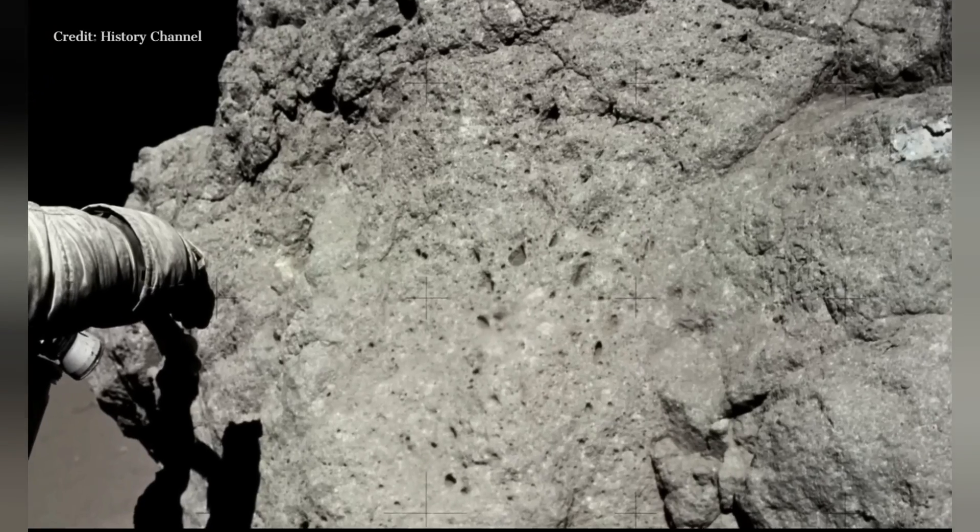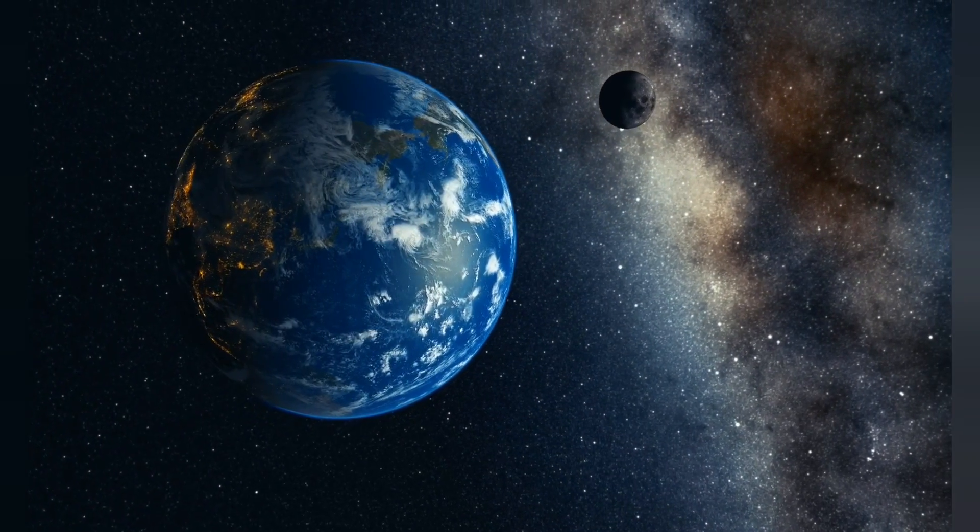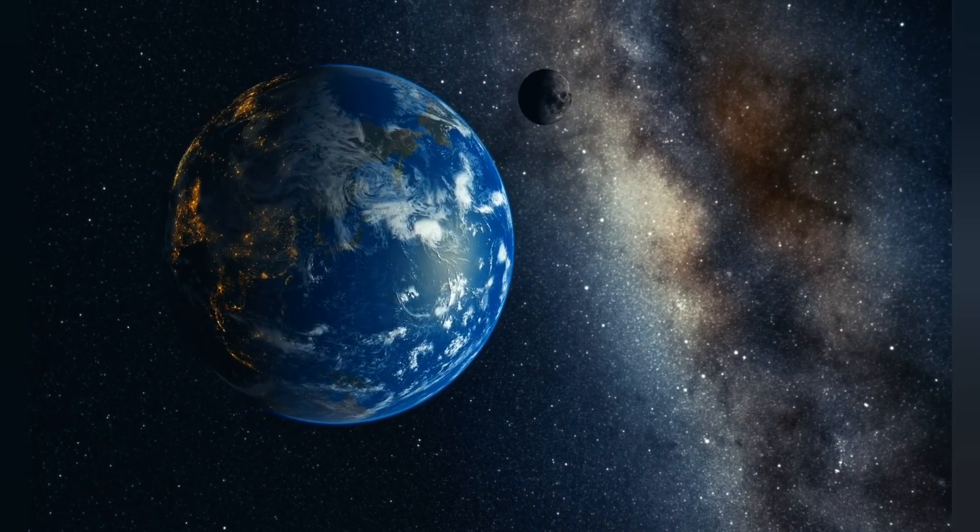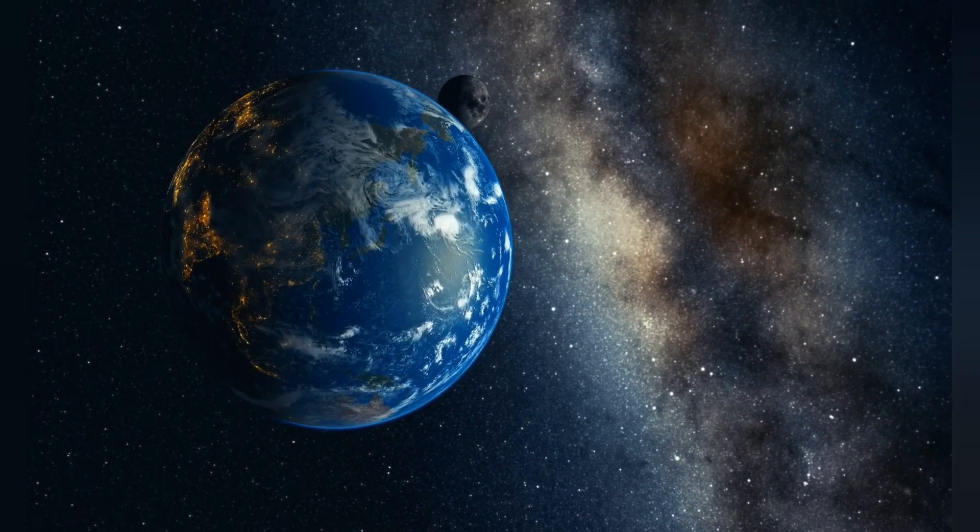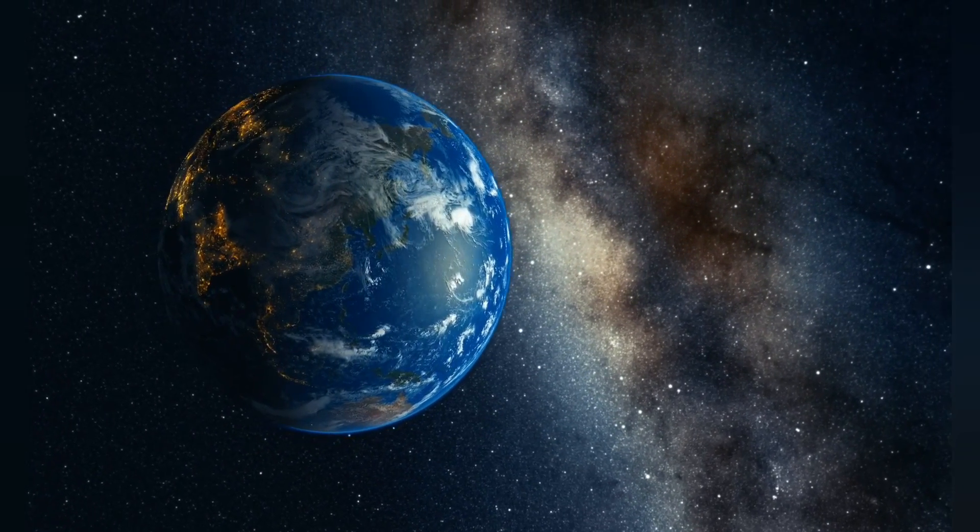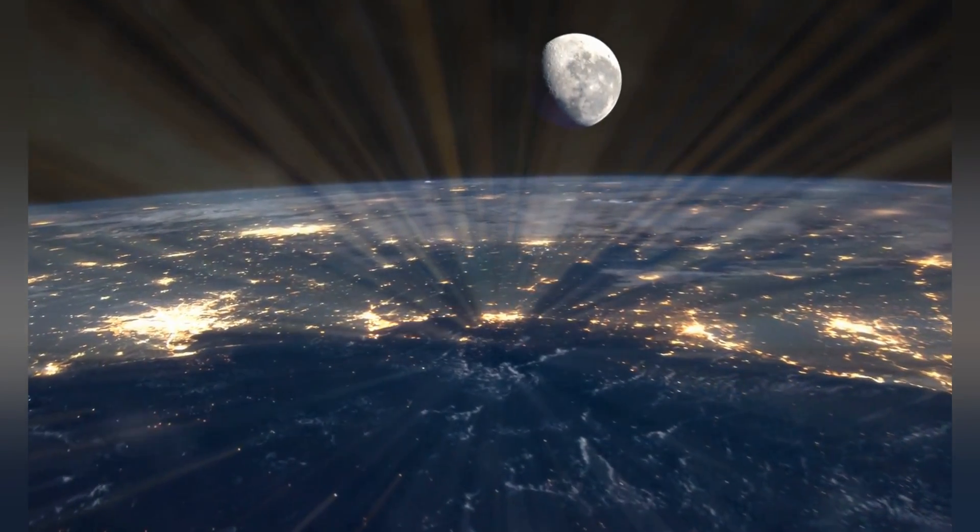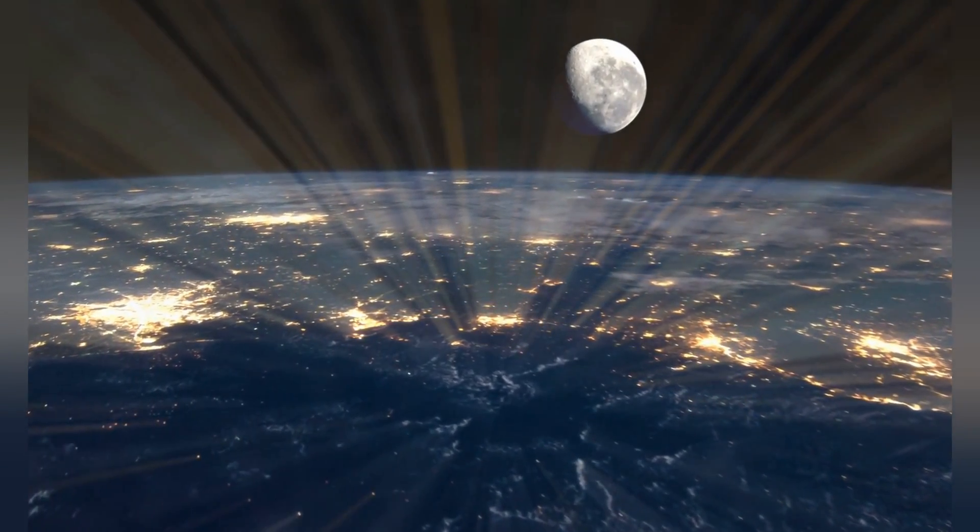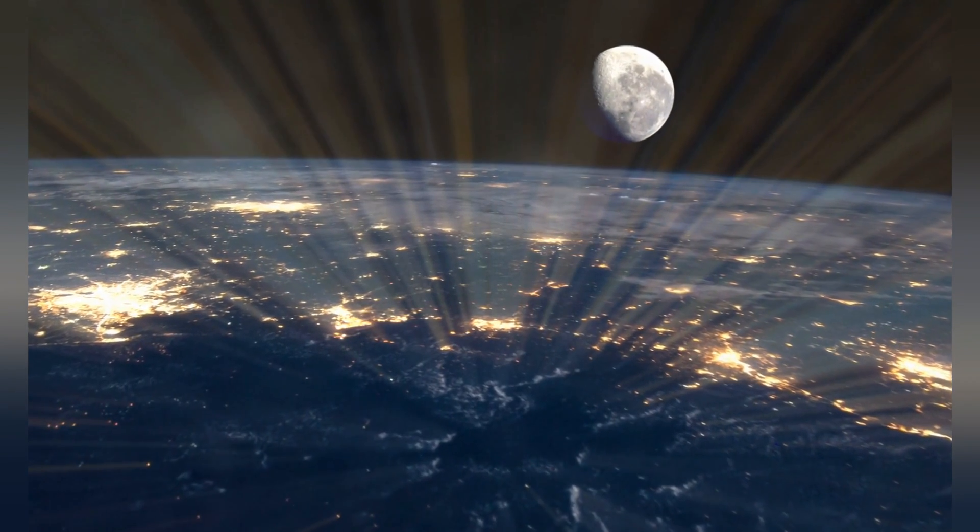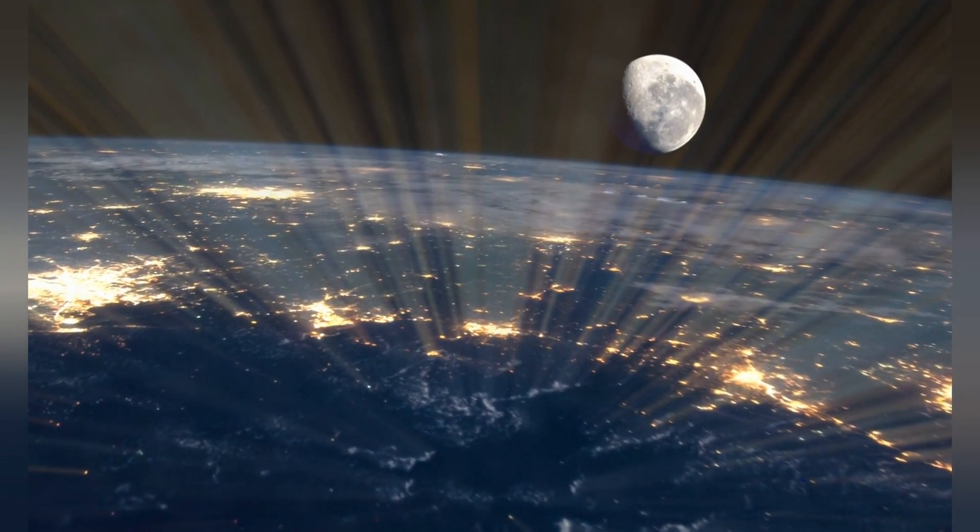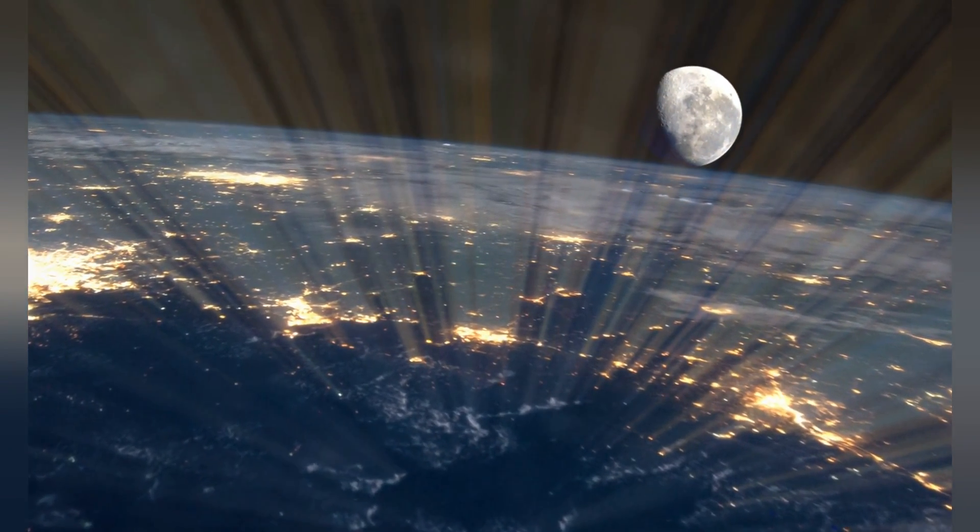The fourth unique property is its orbit. It is much closer to Earth than any other moon in the solar system, and its close proximity has led to significant gravitational interactions with our planet. This interaction has caused the moon to gradually move away from Earth over time and has played a role in the Earth's tides and stabilizing its axial tilt.